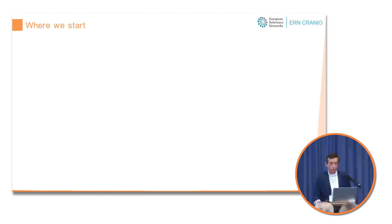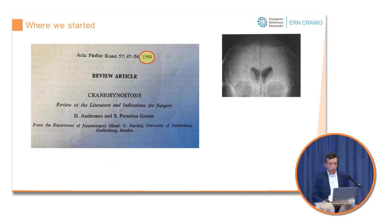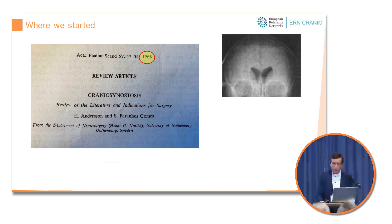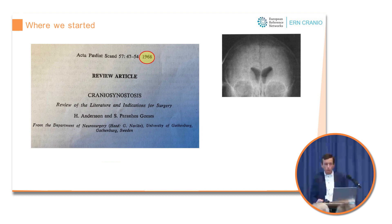The first scientific report of craniosynostosis from my hospital was published in 1968, discussing intracranial hypertension and appearance as indications for surgery — the same things we still debate. They had, however, only radiographs for the skull and pneumoencephalography for visualization of the intracranial space, where air was injected into the cerebrospinal space, which was a difficult, painful, and even dangerous method.